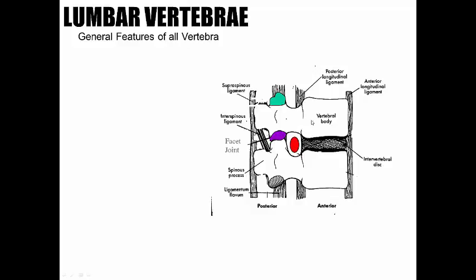Here we have the vertebral body and the neural arch. With two vertebral bodies together, you can see the intervertebral foramen — 'foramen' means hole, 'inter' means between two vertebra. You can see your superior process and your inferior process. The inferior process of the superior vertebra connects with the superior process of the inferior vertebra. You should really look at a skeleton to get that straight in your mind.